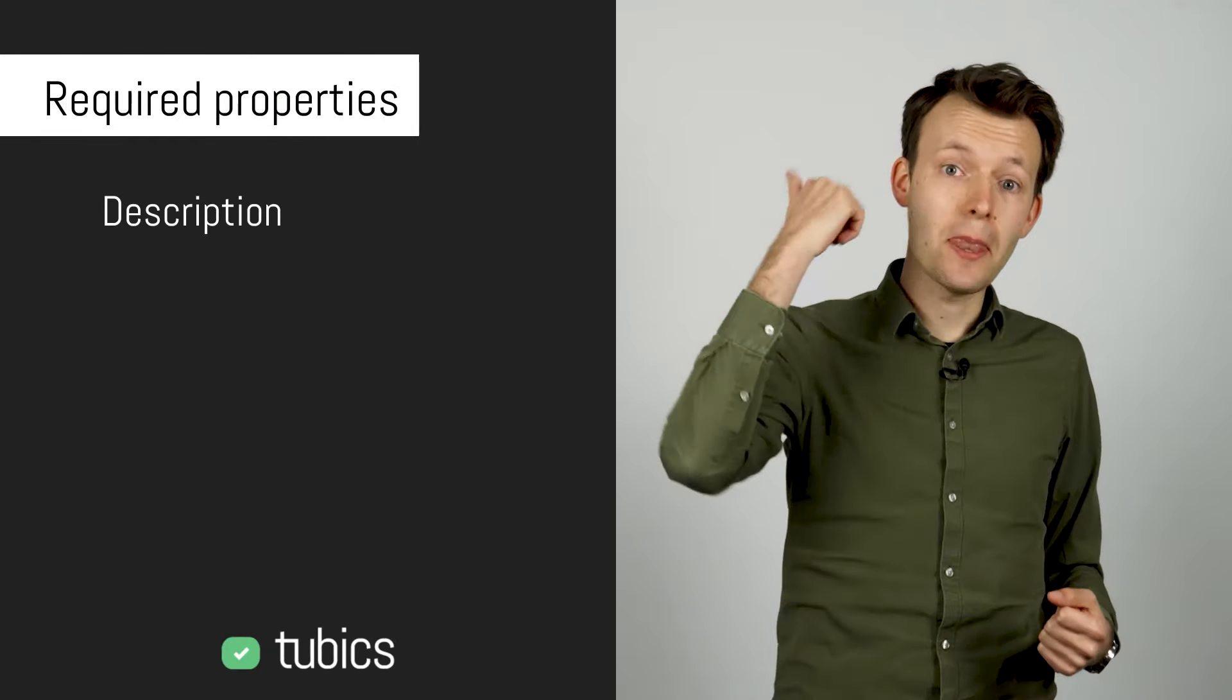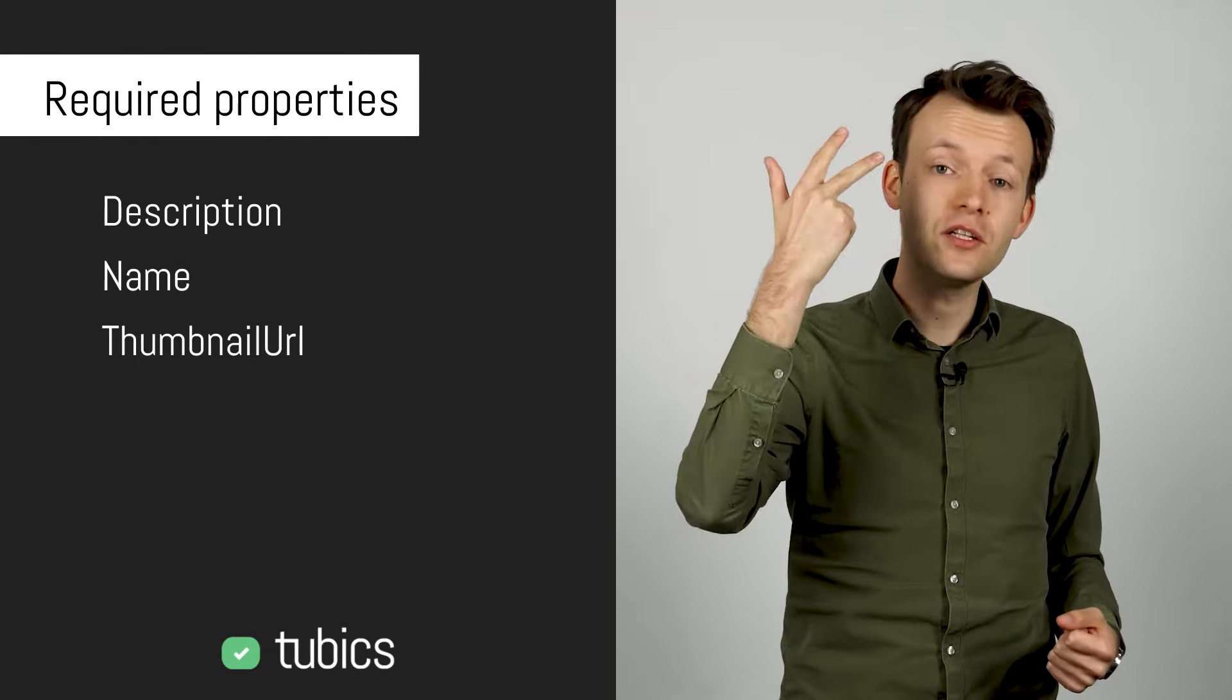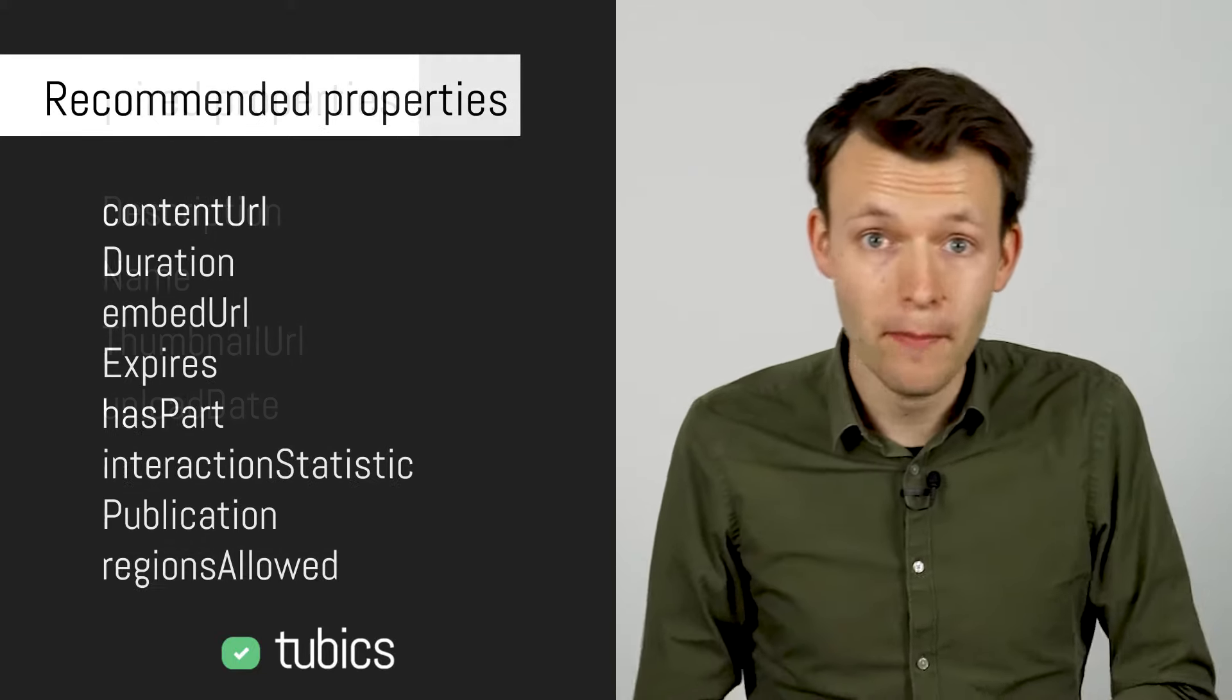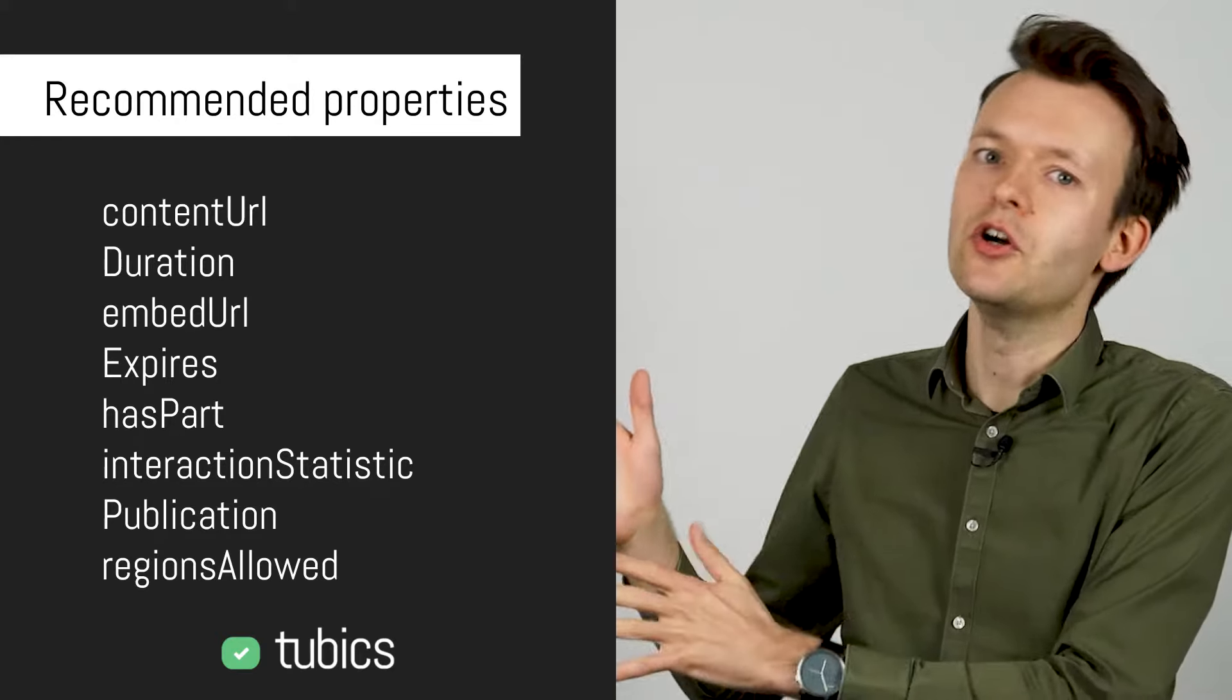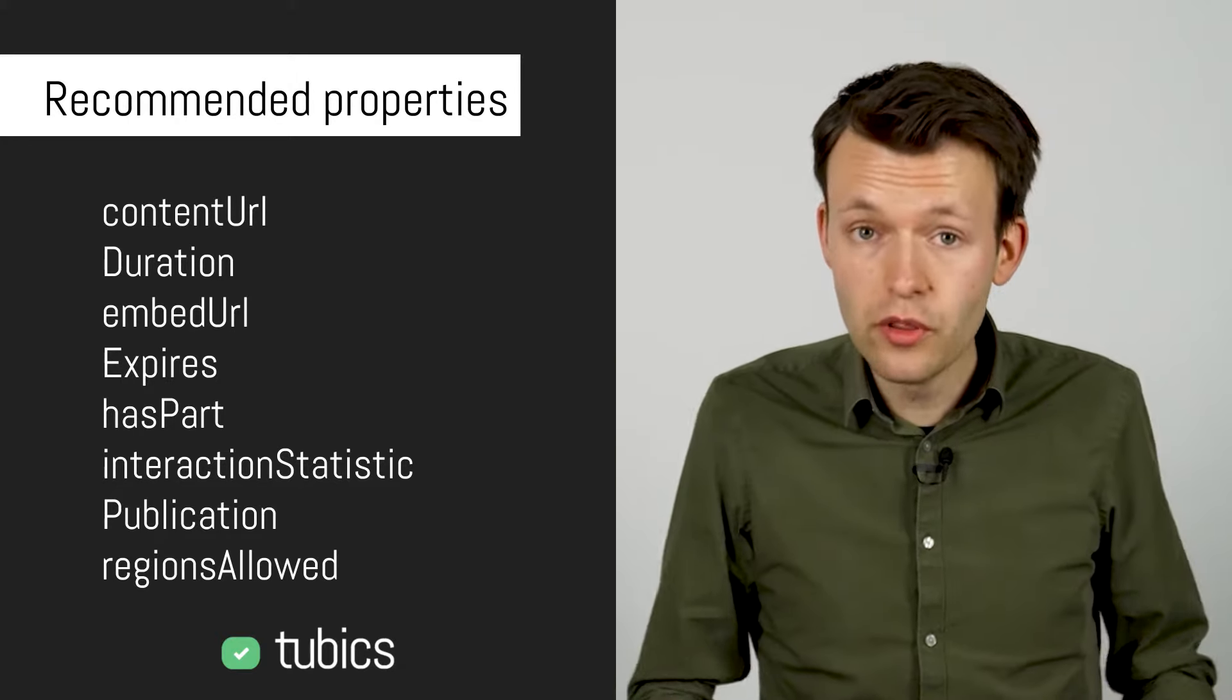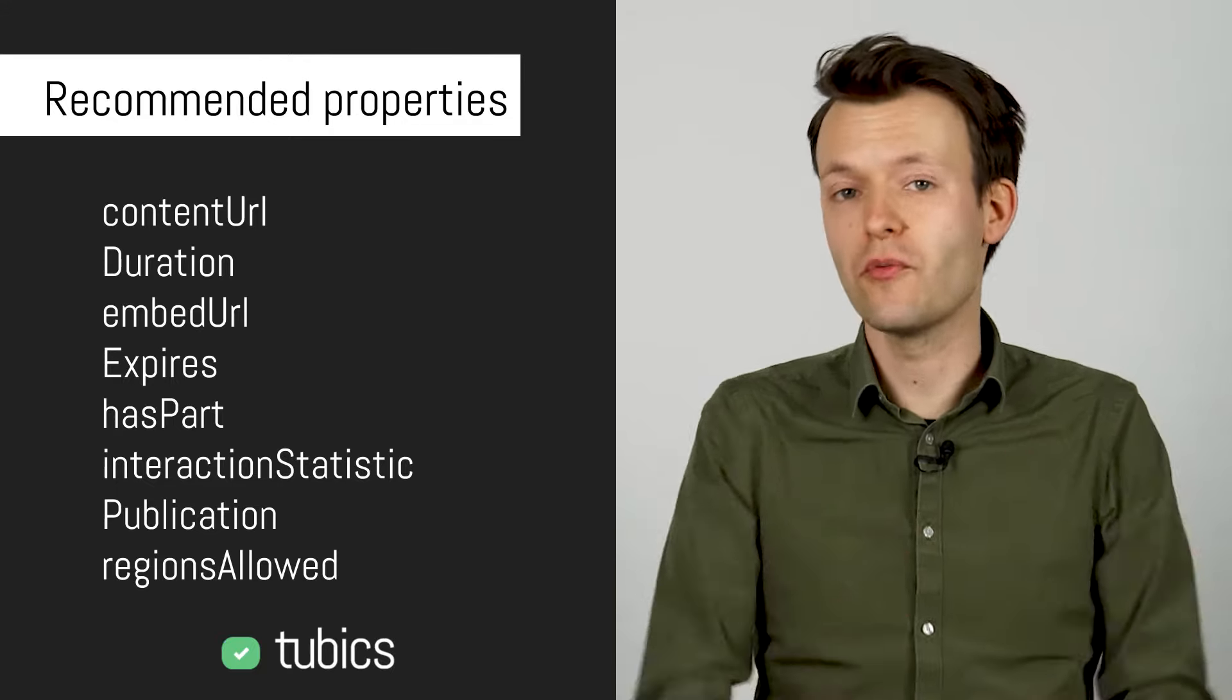There are four required properties that you need to include in your video object. Otherwise, Google might not be able to extract any information out of it. So you should definitely include a description, a name, the thumbnail URL and the upload date. And then there are some recommended properties that you can see here. You do not need to include all of them, but you can definitely include them to add more information for Google.